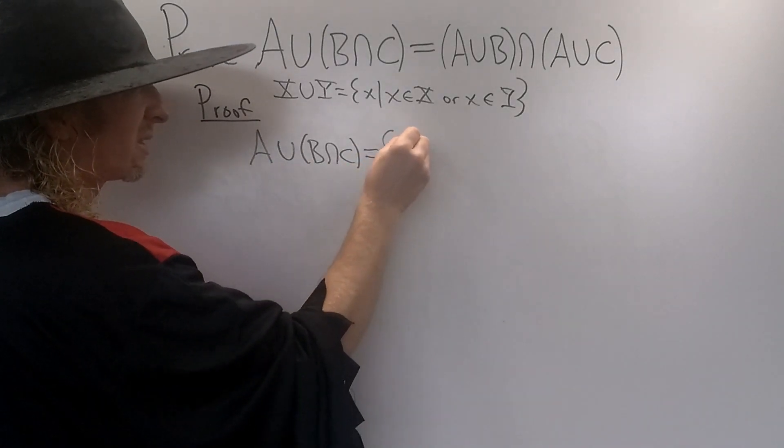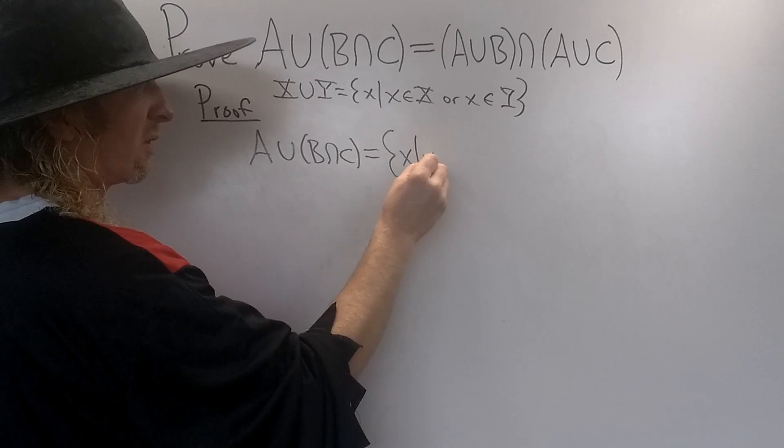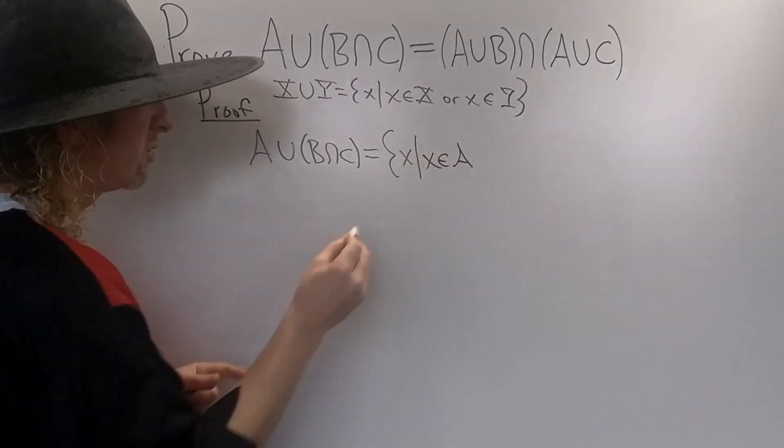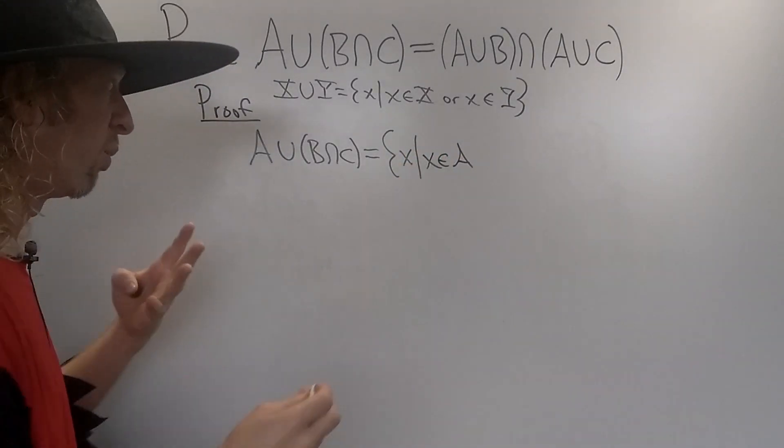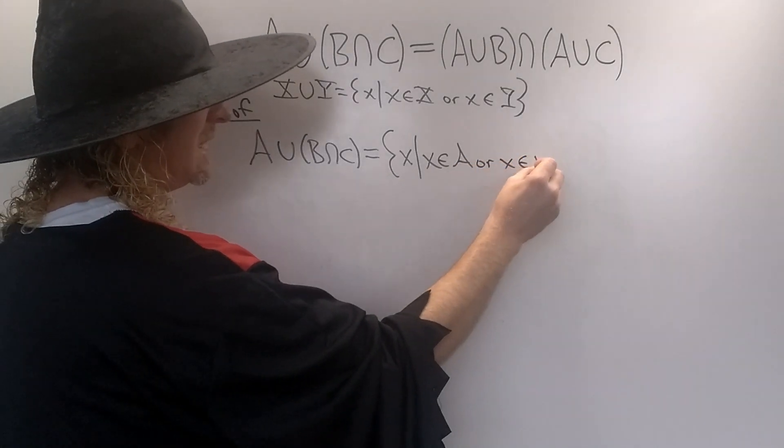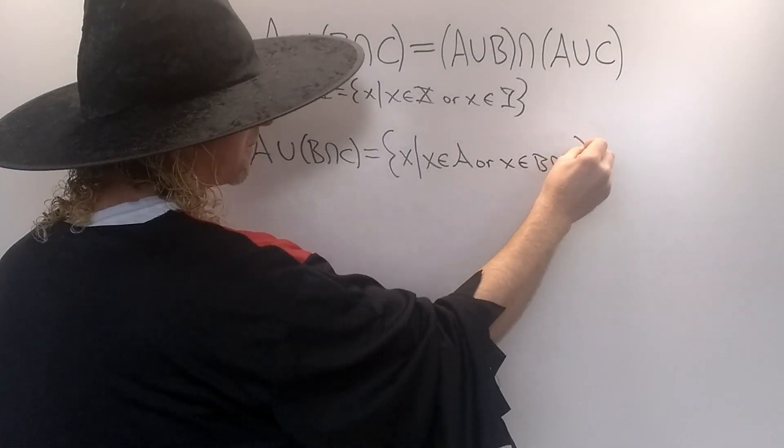So this is the set of all x such that x is in A, and then whenever you take the union you can replace that with an or. So, x is in A or x is in B intersection C.